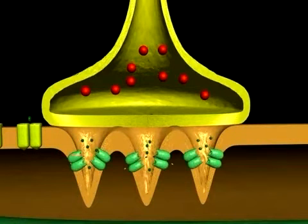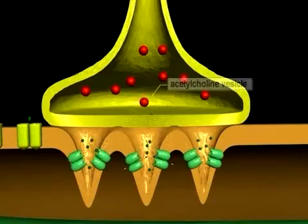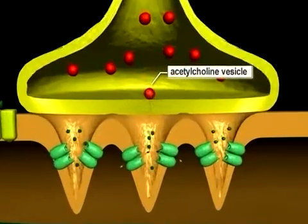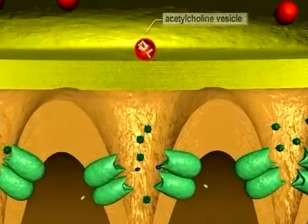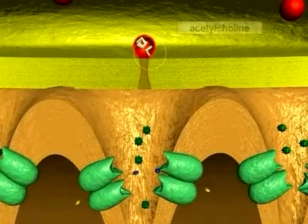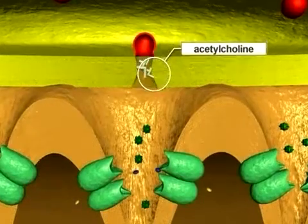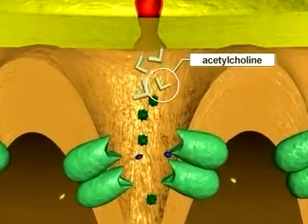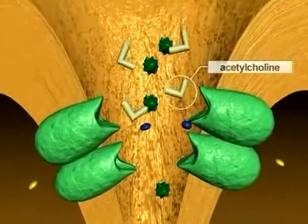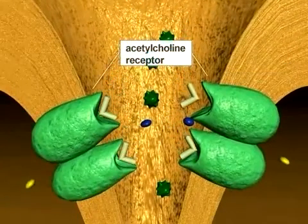As the action potential reaches the neuromuscular junction, vesicles containing acetylcholine fuse with the membrane of the nerve terminal and acetylcholine is released into the cleft. Acetylcholine molecules rapidly diffuse across the cleft and bind to the acetylcholine receptors.